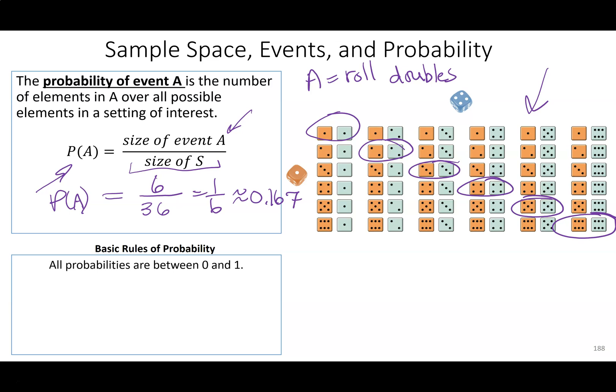Let's talk about some rules. All probabilities need to be between zero and one. If a probability equals zero, it means it never happens — it's literally impossible. If it's equal to one, that means it always happens; there's never a scenario where it doesn't happen. You can't have negative probabilities and you can't have probabilities bigger than one.